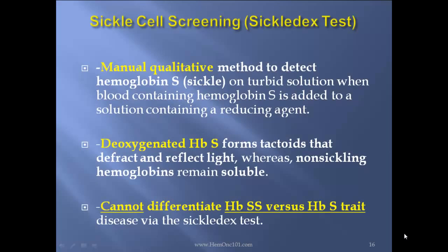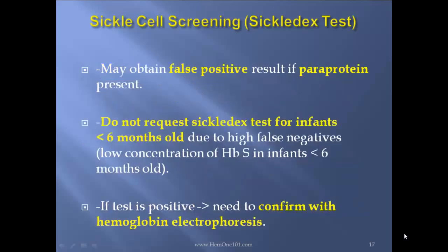Sickle cell screening — the Sickledex test. This is a manual qualitative method to detect hemoglobin S in a turbid solution when blood containing hemoglobin S is added to a solution containing a reducing agent. The deoxygenated hemoglobin S forms tactoids that diffract and reflect light, whereas non-sickling hemoglobins remain soluble. The biggest take-home: it cannot differentiate hemoglobin SS versus hemoglobin S trait. You may obtain false positive tests if abnormal protein is present. Do not request the Sickledex test for infants less than 6 months old due to high false negatives. If the test is positive, confirm with hemoglobin electrophoresis.